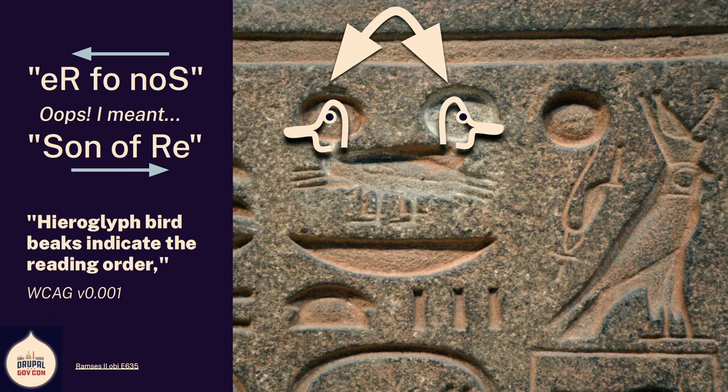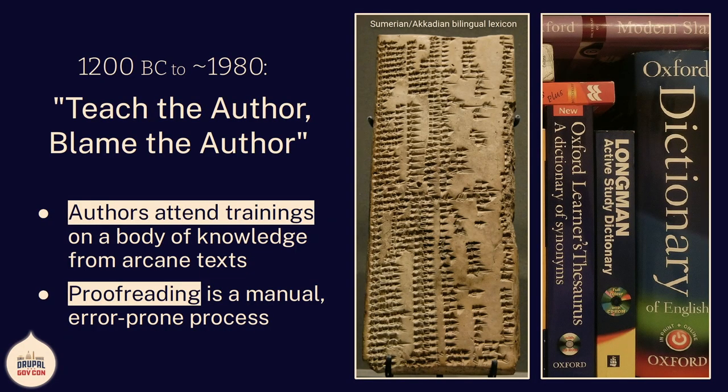It turns out WCAG version 0.0001, from about 1200 BC, says that the birds are supposed to face in the direction you're supposed to read the line, because you can write hieroglyphics right to left or left to right. Some poor carver carved in stone the name Ramses, son of Ra, misspelled his boss's name by putting the bird backwards, and had to plaster over it and carve it again. So you were looking at 3,000-year-old whiteout, and somewhere in the last 3,000 years the plaster fell out, and the duck has two heads. Why do I start here? Because the entire history of created content has been all about blaming the author.